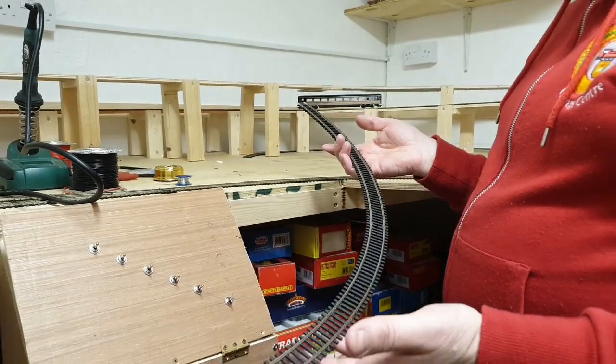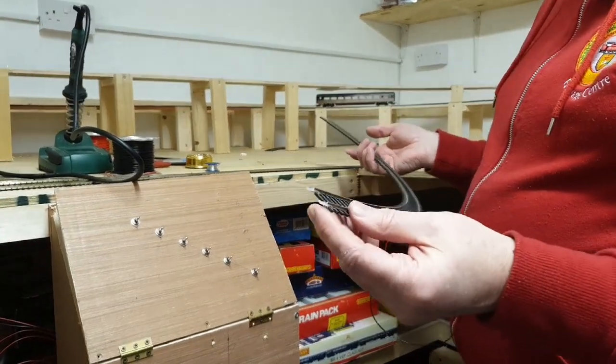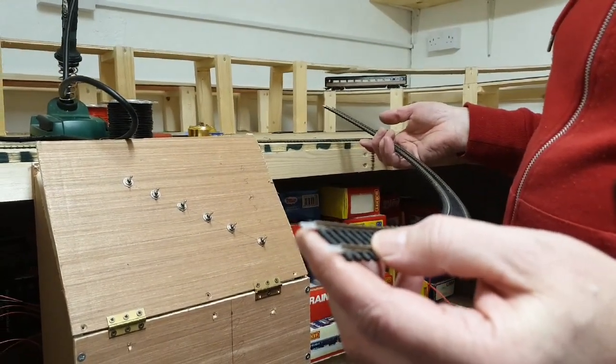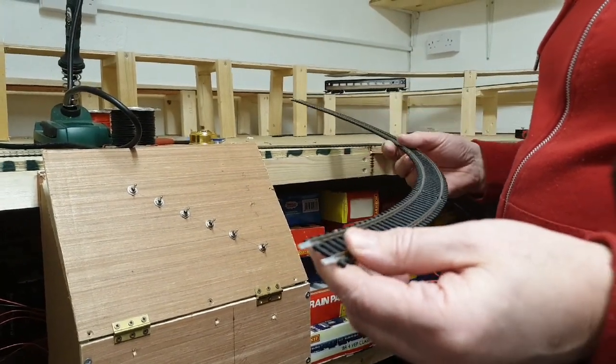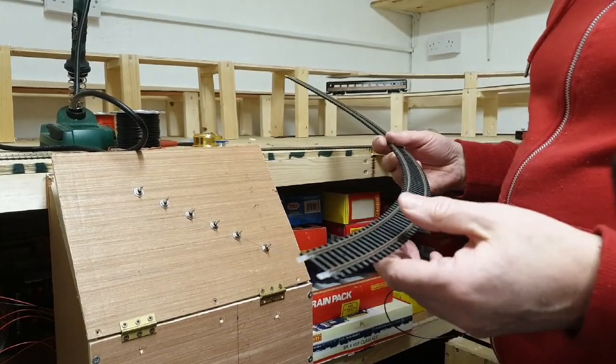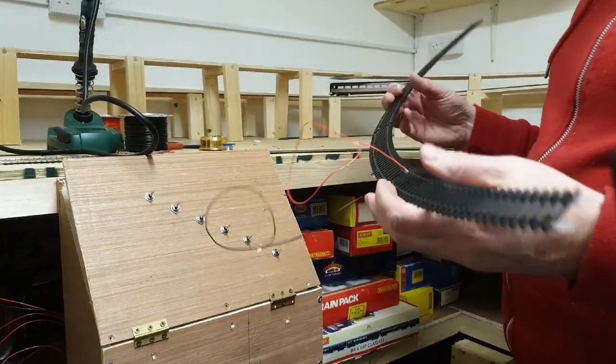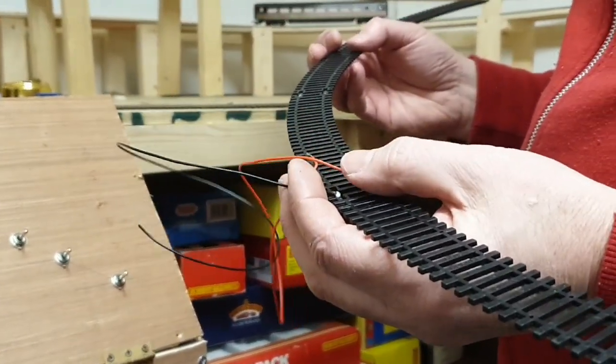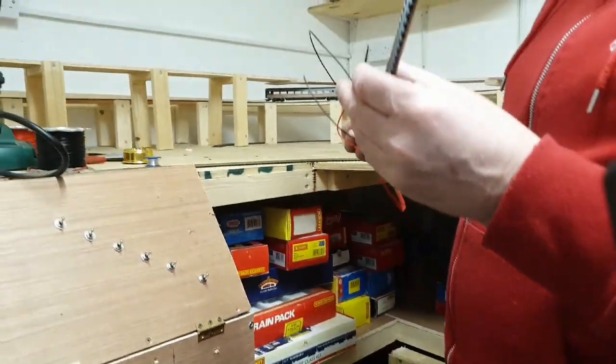There's that section of track now prepared. If you look on the end, we have the plastic fish plates on there. If you don't have plastic fish plates, you could simply just cut a gap in the rail using a Dremel type tool. I've soldered on two droppers onto it, which will be connected to the auto-reverser. So let's just fit those in place now.